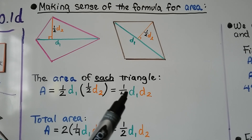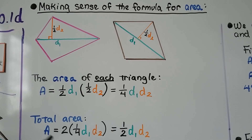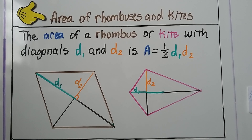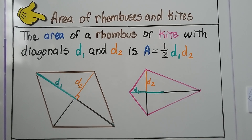If that's the area of one triangle, then to find the area of the entire kite we'd do two of these. So we'd have two times one-fourth times the first diagonal times the second diagonal, which gives us half d1 times d2 for the total area of a kite or a rhombus.